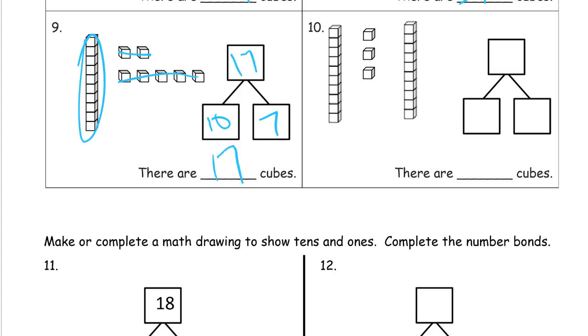Here's two tens. That's twenty. And that's three ones. Twenty and three. Twenty-three cubes.